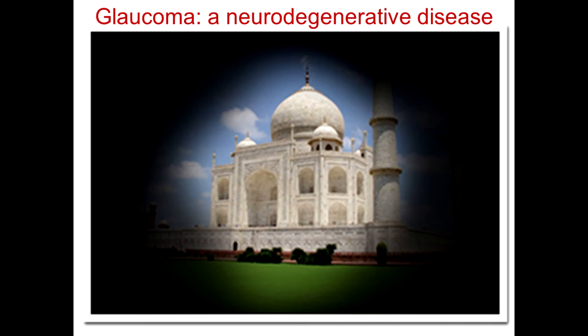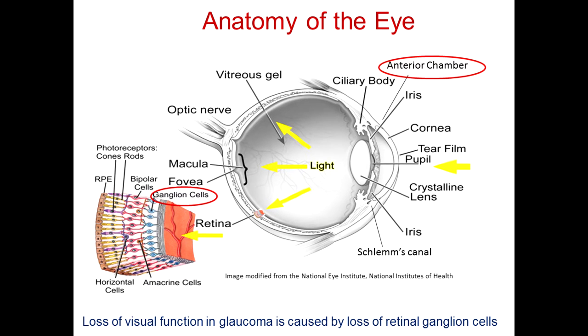Glaucoma is a neurodegenerative disease where, silently and without any pain, a person loses their peripheral vision. The person only gets to realize they are losing vision once they have lost about 70 percent of it, when only their central vision remains. That's why it's called a tunnel disease.